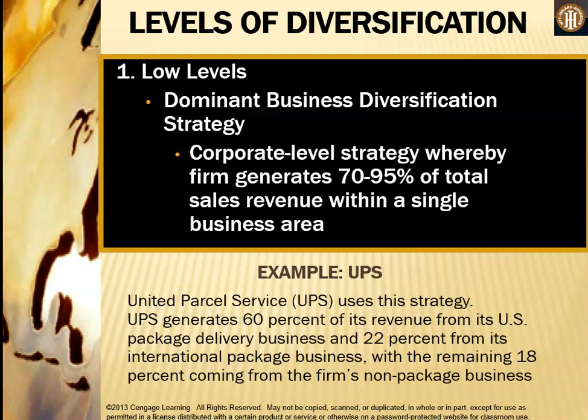Also at low levels of diversification, we have the dominant business diversification strategy, where the corporate level strategy generates 70 to 95% of total sales revenue within a single business area. For example, UPS — United Parcel Service — uses this strategy. UPS generates 60% of its revenue from its US package delivery business and 22% from its international package business, with the remaining 18% coming from the firm's non-package business.